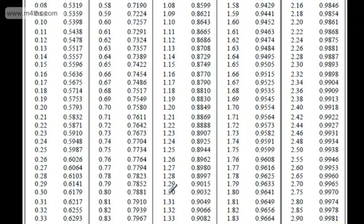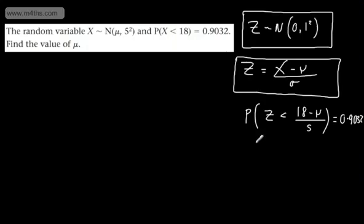So we can see that value gives us 1.3 just here. So what I can now write is the following. I can say 18 minus μ, which is the mean, divided by 5 is going to be equal to 1.3.